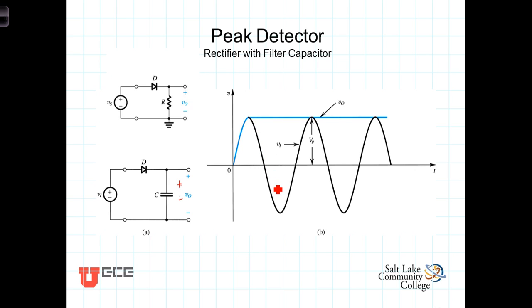As the source then drops off, so that the voltage on the left-hand side here, the diode drops below this peak voltage here, the diode doesn't allow current to flow back this way, so there is no way for the capacitor to discharge. And the capacitor then stays at that peak voltage.